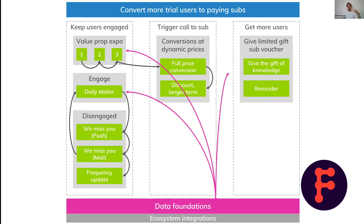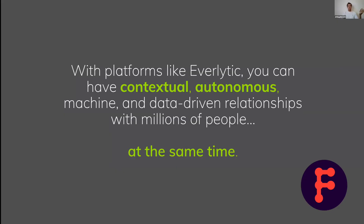That's just a quick rundown of how you set these things up. The principle to land is: you set this up once, it starts working for you, and then you customize, tailor, and optimize the creative — you keep it relevant. You build on this mesh of conversational workflows to make sure you start to cater for niche exception cases, treat users in a unique way, and have a conversation already on deck for all users — and the technology and your data will just drive all of this. With platforms like Everlytic, you can have contextual, autonomous, machine and data-driven relationships with millions of people at the same time. That's the value.